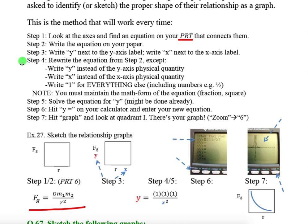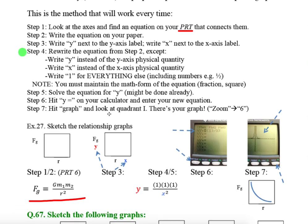So PRT is on your reference table. There is an equation that relates these two. Here it is, written on your reference table page 6, not something you need to memorize. Write the equation on your paper. Step 3: write the letter Y next to the Y-axis label, write the letter X next to the X-axis label.